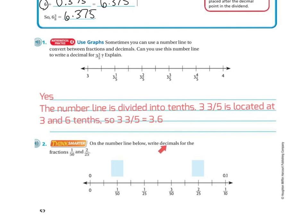On the number line below, write the decimal for the fractions 1 fiftieth and 2 twenty-fifth. So there's my 1 fiftieth, and if I were to do that, I'm over 1, 2. So I'm going to put 0.02, and then over here it's going to be 0.08. So if you look, that's 8, and this one right here was 2 tenths, and that was 2 hundredths, and that one was 8 hundredths.